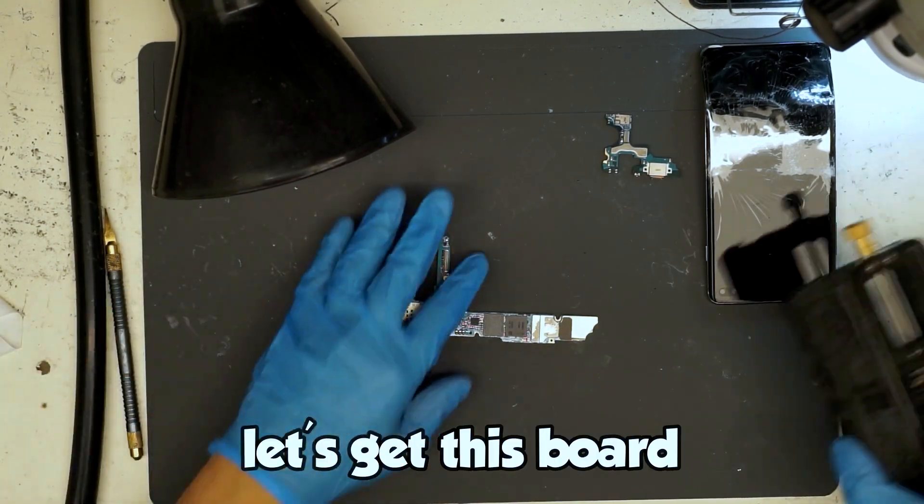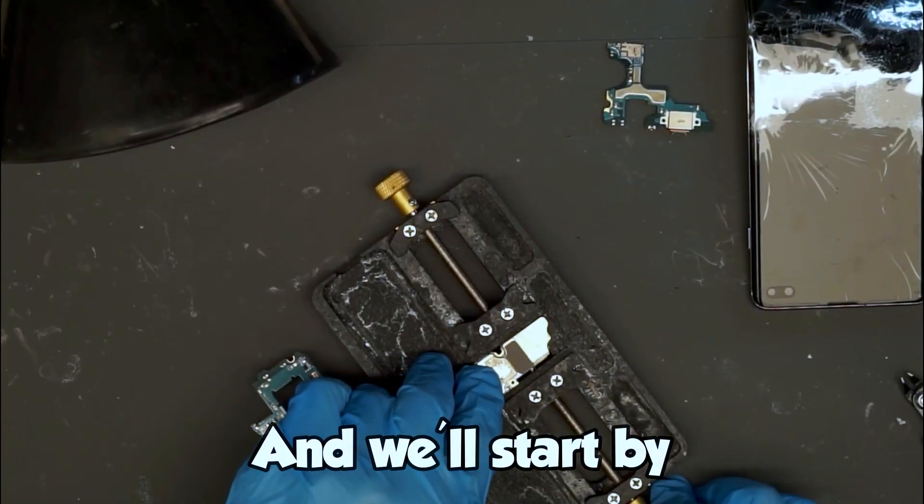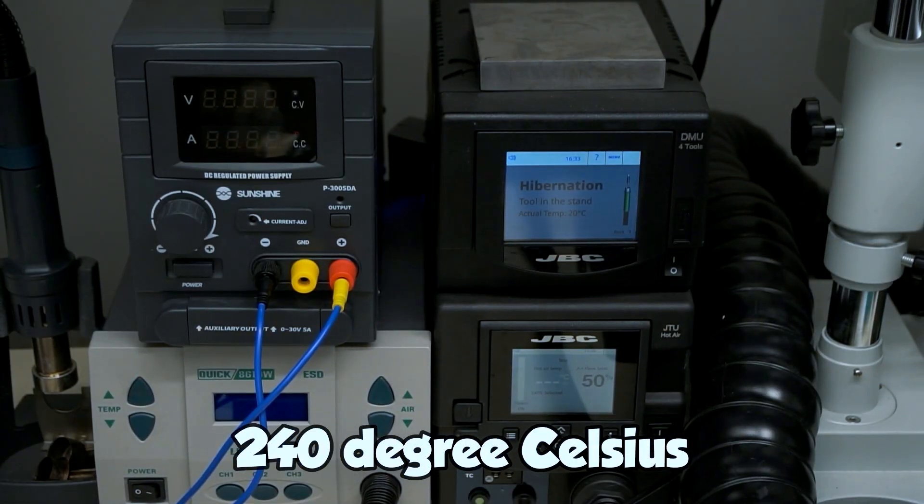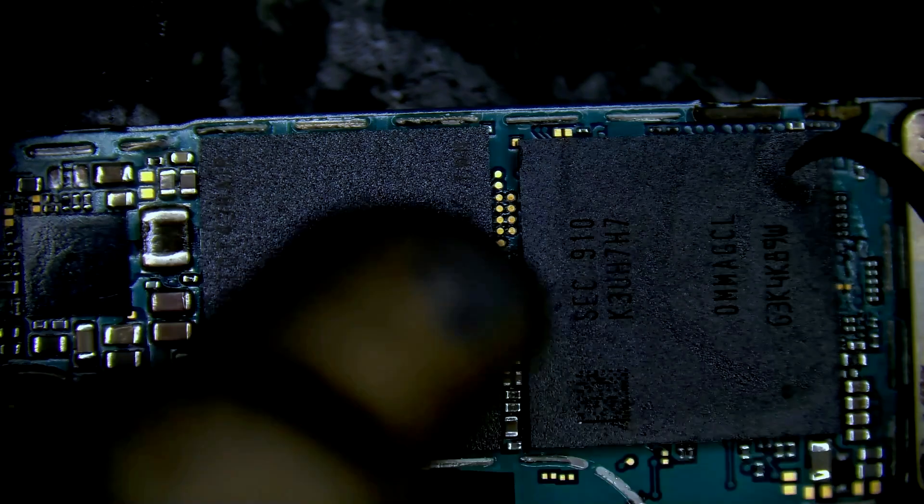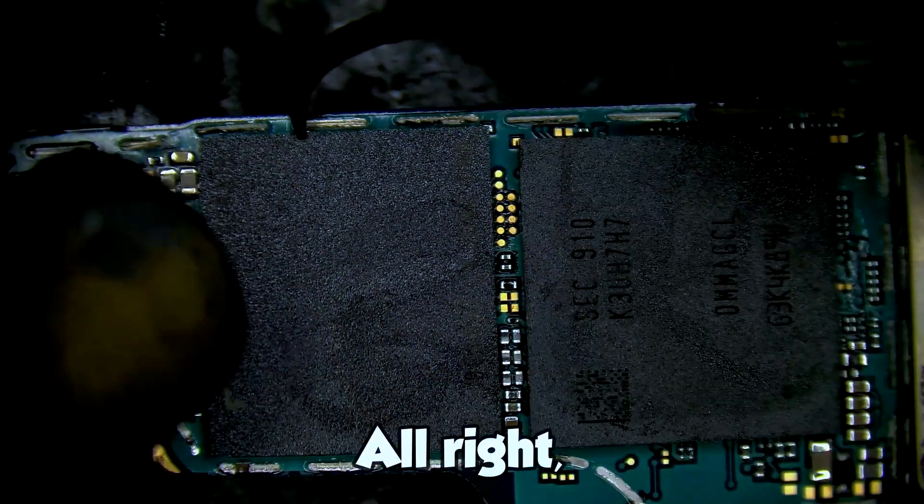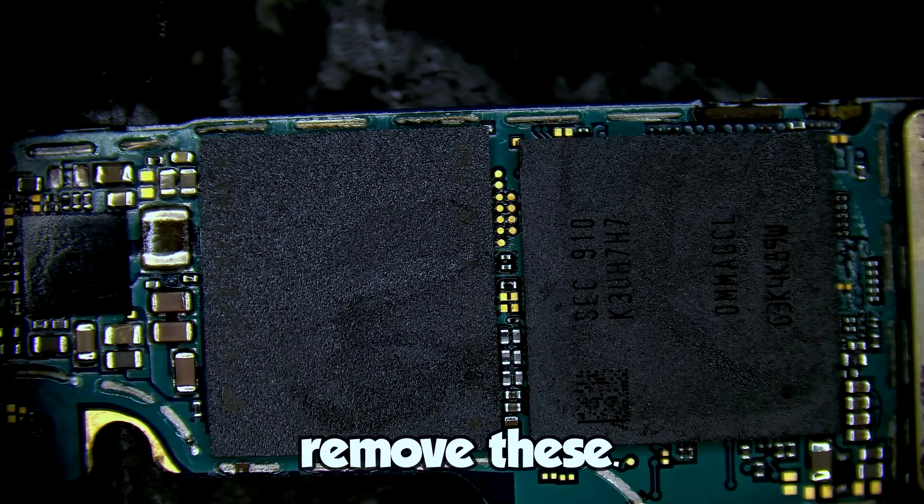Alright, let's get this board in the fixture, and we'll start by cleaning underfill around these two chips. 240 degrees Celsius and 50 air flow. Alright, we can go right ahead and remove these.